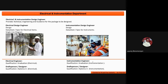For electrical and instrumentation, the same process applies as we saw for other departments. The electrical design engineer does the design, produces data sheets and specifications for electrical items, and develops single line diagrams. Similarly, the instrumentation engineer does the design and produces data sheets and specifications. Qualifications are an electrical engineering or instrumentation or electronics engineering graduation.